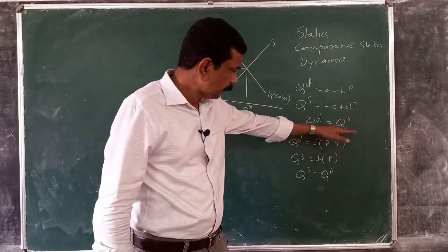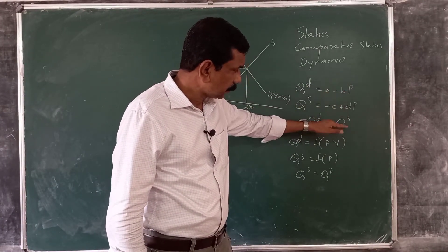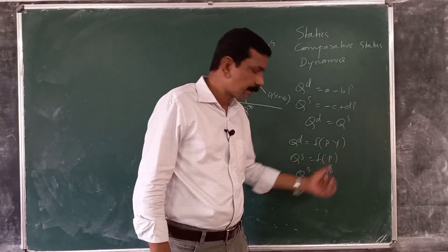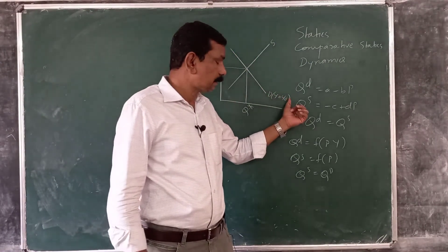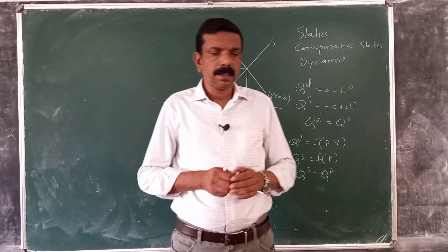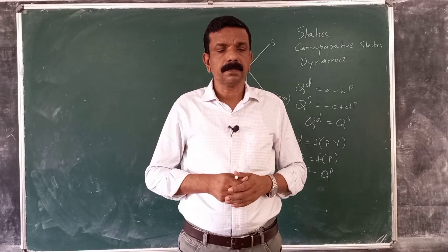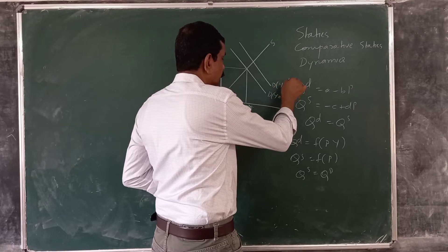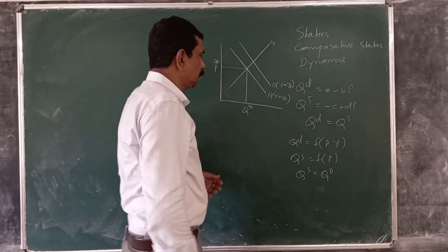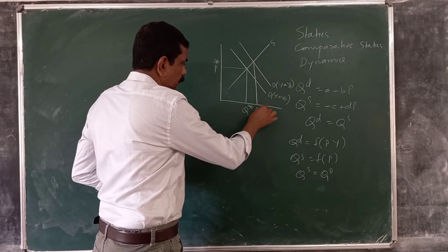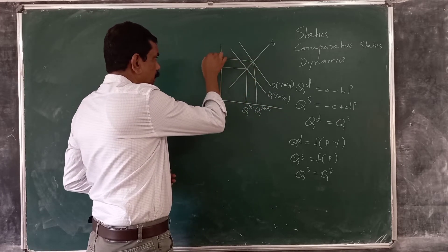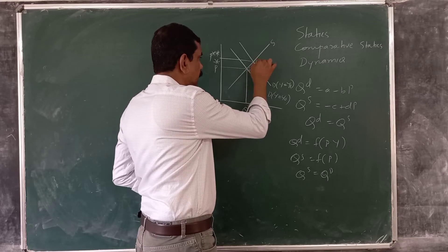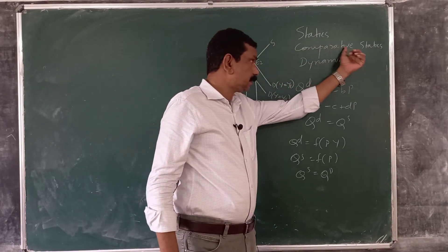If the model has no exogenous variables, there will be no change in the equilibrium position. But here there is an exogenous variable y, so the demand curve is drawn for a particular level of income, say y0. If y increases from y0 to y1, equilibrium quantity increases and equilibrium price also increases — the equilibrium moves from e1 to e2. This is comparative static analysis.